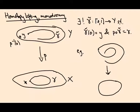If you start off at this point here, it lives over this point downstairs, and you follow along the lift of the path, you end up over here. So just because you have a loop downstairs doesn't mean that the lifted path also has to be a loop. And this allows us to define this notion of monodromy.